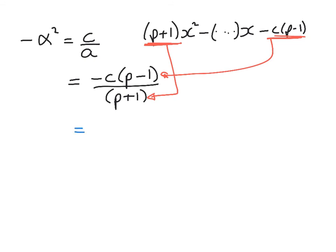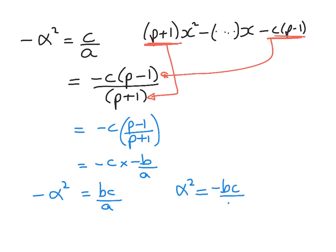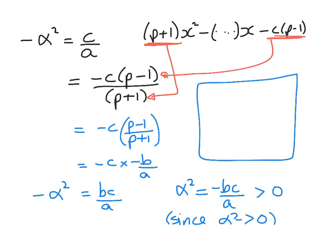But from above, we've shown that p minus 1 over p plus 1 is equal to negative b over a. So we've got negative c times negative b over a, which is bc over a. So we've got negative alpha squared is equal to bc over a, which must be positive since alpha squared is positive. Therefore, bc over a is negative as required.